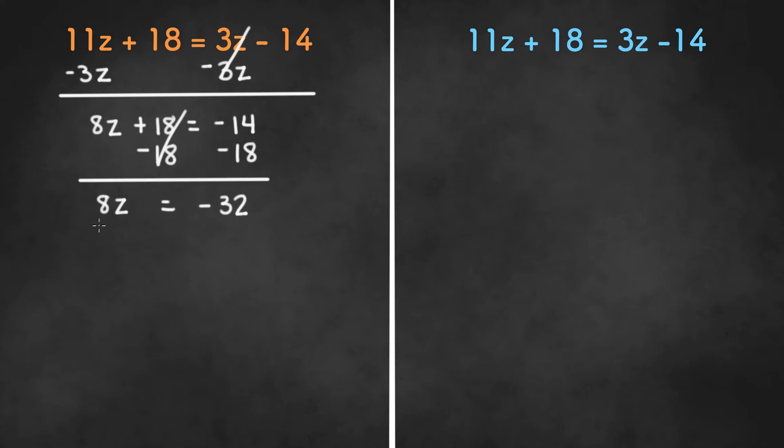Now all we have to do is divide both sides by 8 to get our final answer. Once you divide both sides by 8, you get z equals negative 32 divided by 8, which is negative 4, and that's our final answer.